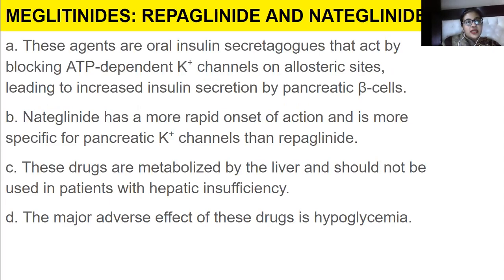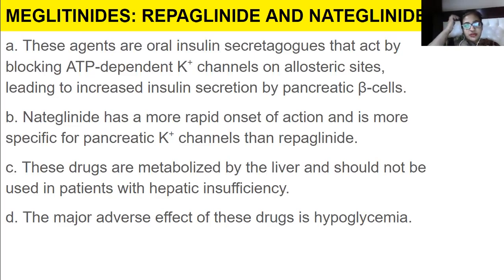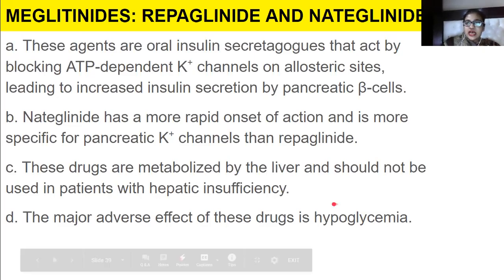Next, we have meglitinides, which include repaglinide and nateglinide. These are oral insulin secretagogues that act by blocking ATP-dependent potassium channels on the allosteric site, leading to increased insulin secretion by the pancreatic beta cells. Nateglinide has a more rapid onset of action and is more specific for the pancreatic potassium channel than repaglinide. These drugs are metabolized by the liver and should not be used in patients with hepatic insufficiency. The major adverse effect is hypoglycemia.